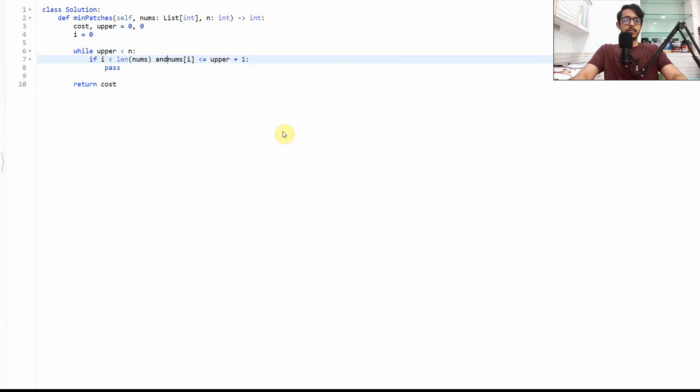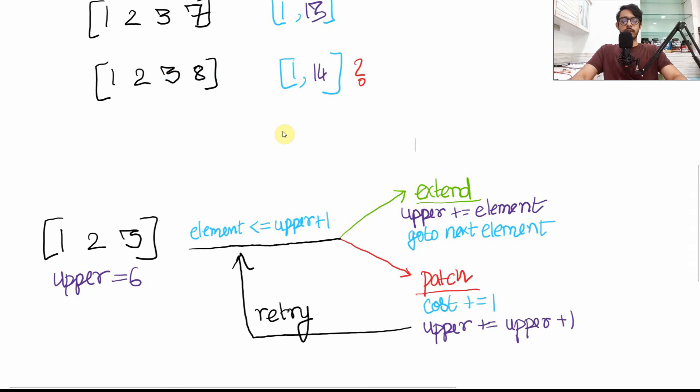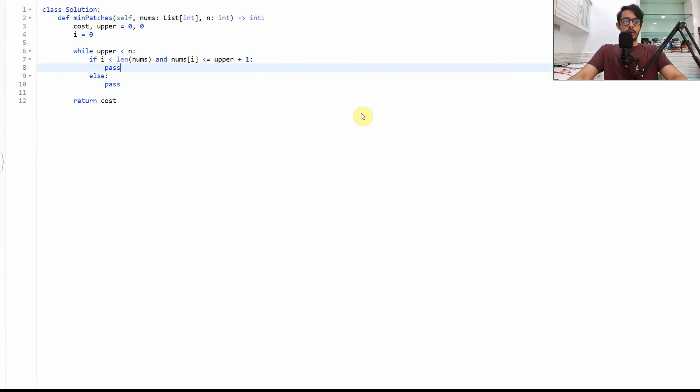Okay we'll do some computation in this case, the green case. Else we'll do some other computation in the red case. Okay so what's the computation here? Upper plus equals to element. So we'll do upper plus equals to element which is nums[i] and i plus equals to one. We'll move on to the next element.